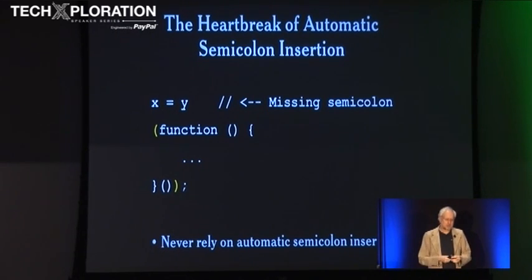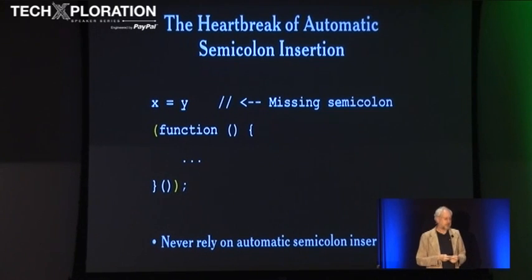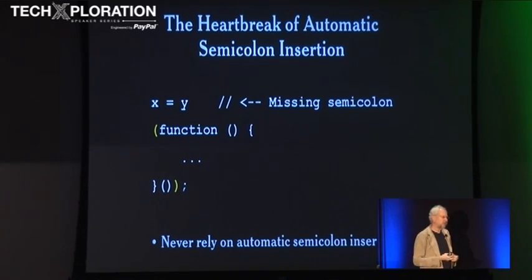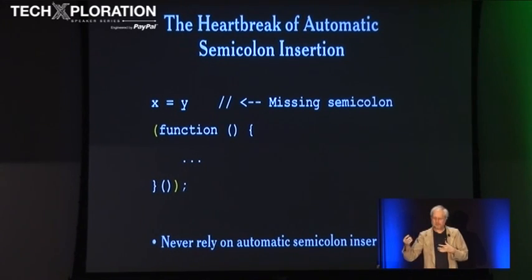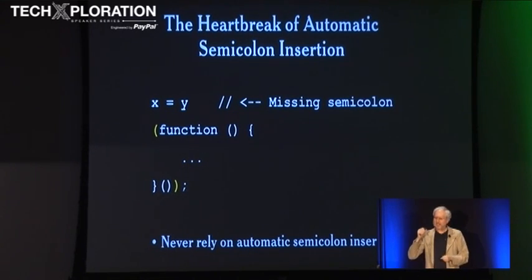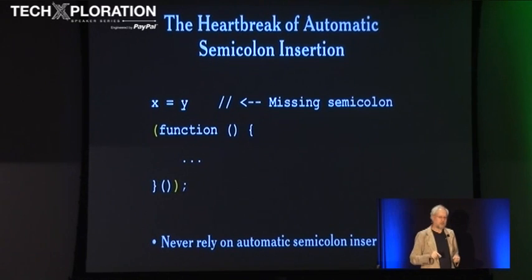I mentioned automatic semicolon insertion before — it strikes again in this context. If we have a statement which begins with a parenthesis and the previous statement did not have a semicolon, then the two get run together. The way semicolon insertion works in JavaScript is the compiler is going along and if it gets an error and sees that there is a line feed nearby, it turns the line feed into a semicolon and then tries again.